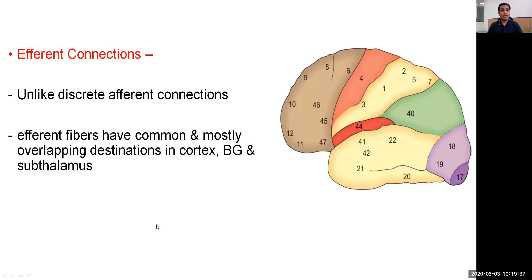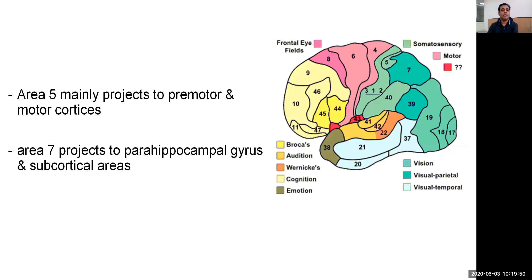Regarding efferent connections, unlike the discrete afferent connections, efferent fibers have common and mostly overlapping destinations in the cortex, basal ganglia, and subcortical structures. Area 5 mainly projects to the premotor and motor cortices, while area 7 projects to the parahippocampal gyrus and subcortical areas.